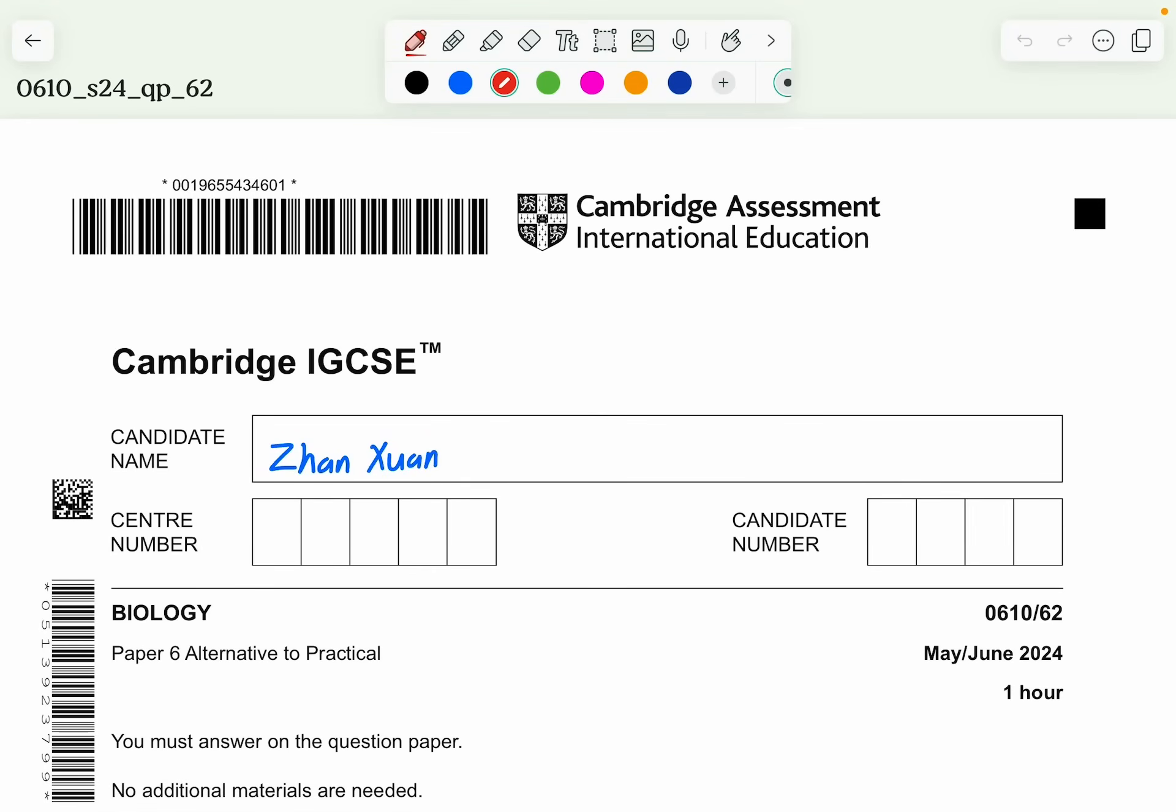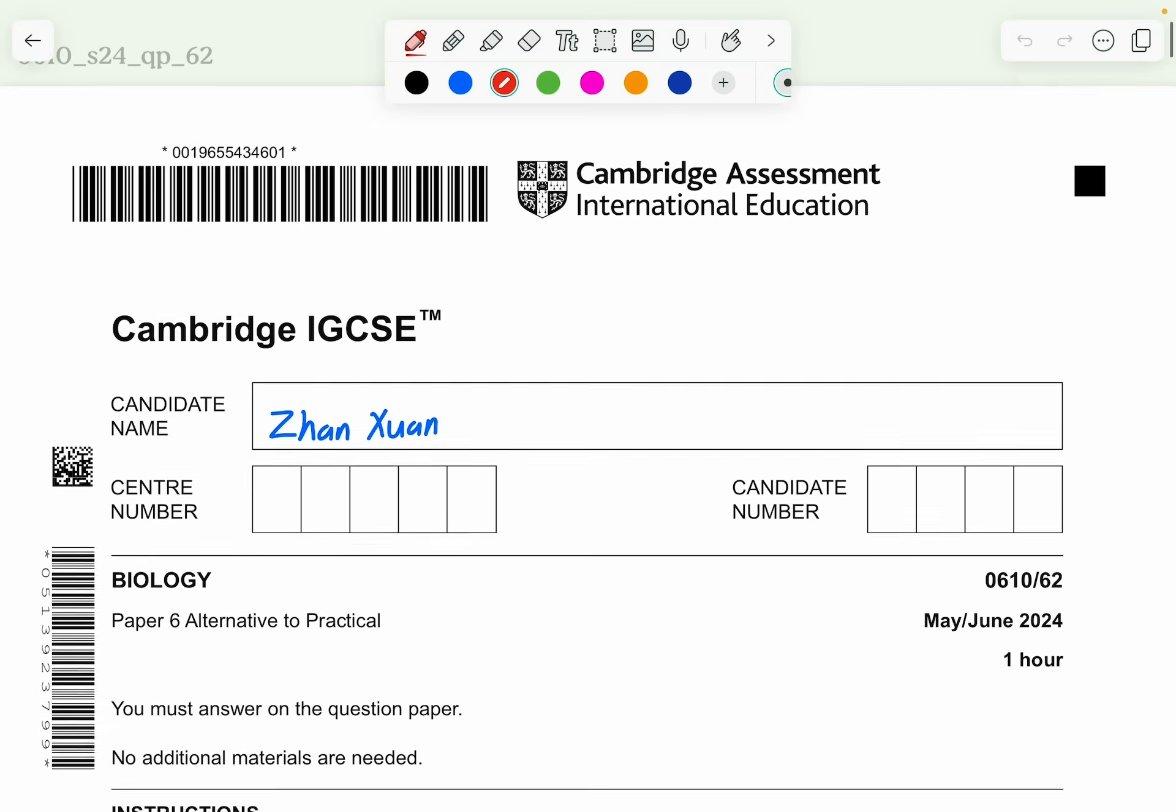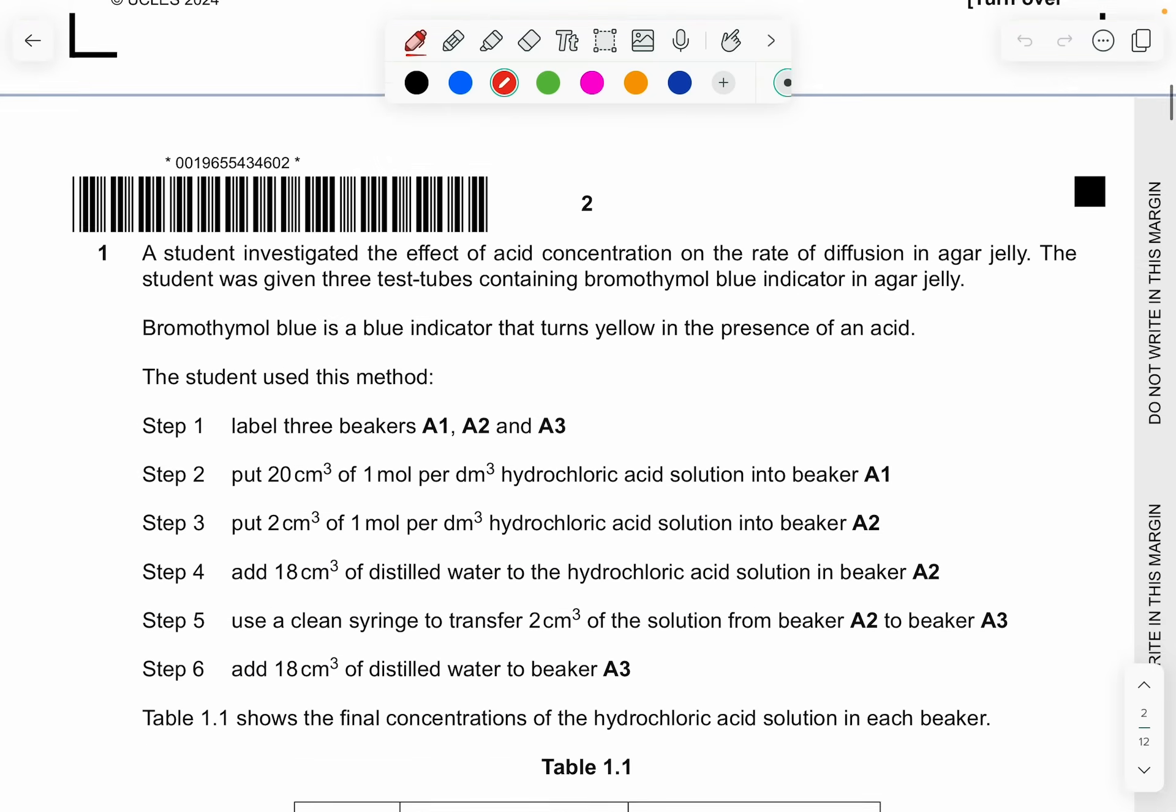Hey guys, welcome back to a new video by Bajri with Zhang Xuan. Today we are going to attempt the Cambridge IGCSE Biology Paper 6 Alternative to Practical, the 0610 Paper 6 Variant 2, the May-June 2024 series. If you have any questions regarding this paper, feel free to comment down in the comment section below. I will reply to you as soon as possible. Alright, so let's start off with this video today.